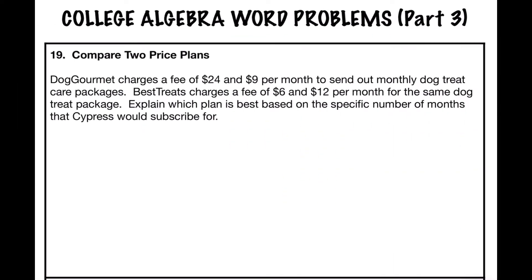Problem number 19 asks you to compare two price plans. Dog Gourmet charges a fee of $24 and $9 per month to send out monthly dog treat care packages. Best Treats charges a fee of $6 and $12 per month for the same dog treat package. Explain which plan is best based on the specific number of months that Cypress would subscribe for.